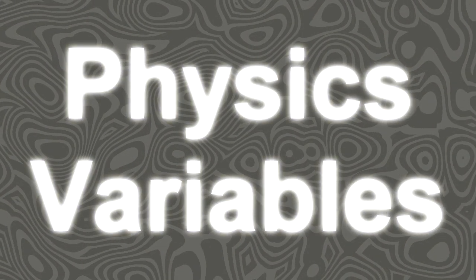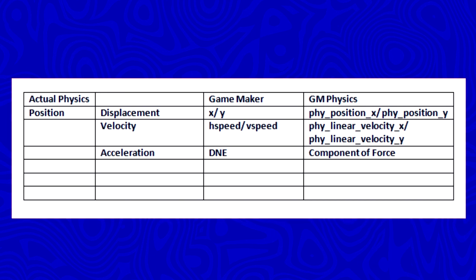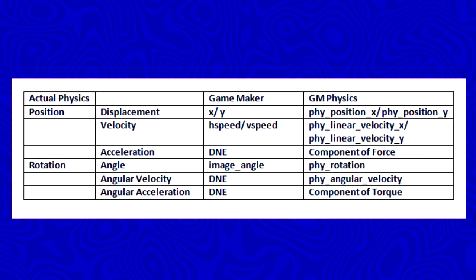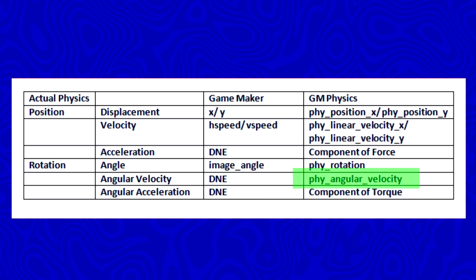The last section is physics variables. They have several variables that are mostly unrelated, but I'll try to organize them. Remember that diagram showing how variables differ between normal GameMaker and physics GameMaker? You have position variables like displacement, velocity, and acceleration. You can draw similar lines with the angle: you have angle, angular velocity, and angular acceleration. GameMaker Studio doesn't have angular acceleration, but it does have phy_angular_velocity, which tells you how fast something is rotating — the change in angle at any point in time. It's probably a good idea to set limits on that, just like we did with speed in the platformer, so things don't rotate crazily out of proportion.